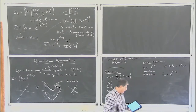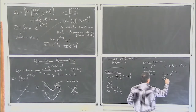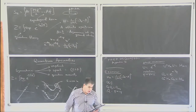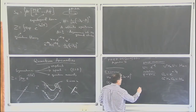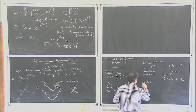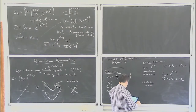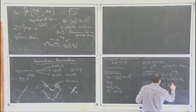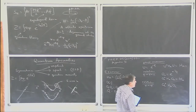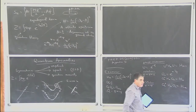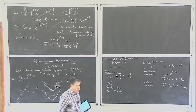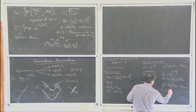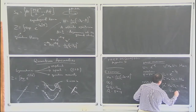For rotations — phi goes to phi plus alpha — introduce O(alpha) = e^(alpha d/dphi). If you apply this to any function of phi, phi is shifted by alpha. O(alpha) commutes with H, so it is a symmetry. For reflection — phi goes to minus phi — you can see that H_A goes to H_{-A}. This is NOT a symmetry for arbitrary A.